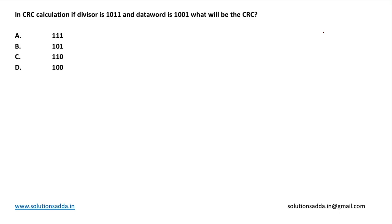This is a question from computer networks. In CRC calculation, if the divisor is 1011 and the data word is 1001, what will be the CRC? Options are: 111, 101, 110, 100.